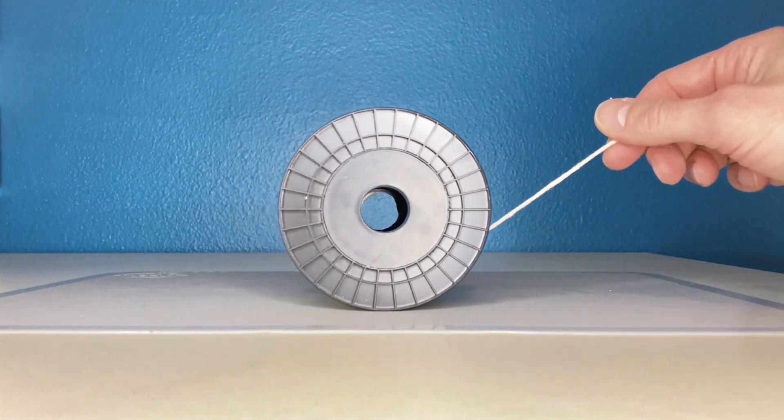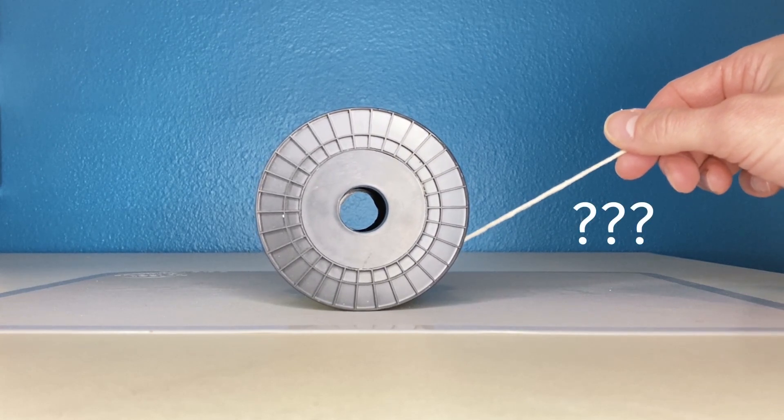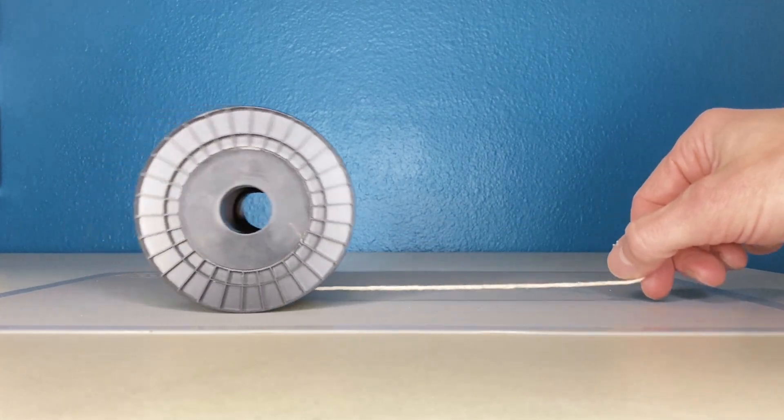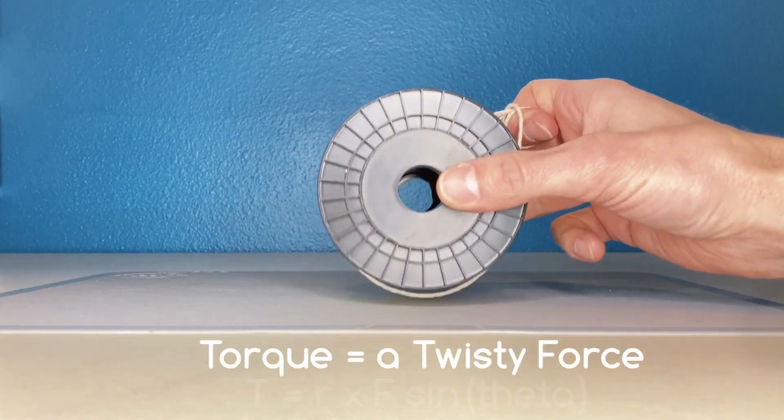And there's actually an angle that I can pull on this string where absolutely nothing happens. And the reasoning behind the rotation of this spool in one direction or the other goes back to torque and really force vectors.